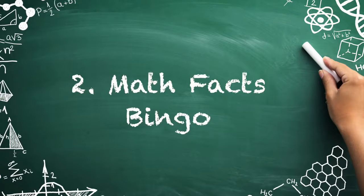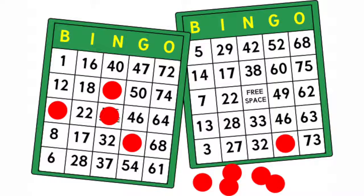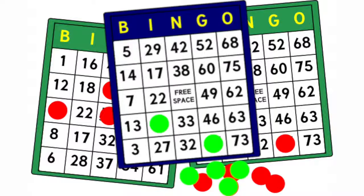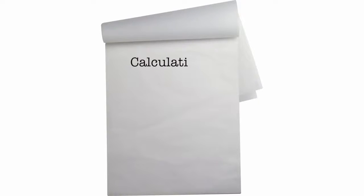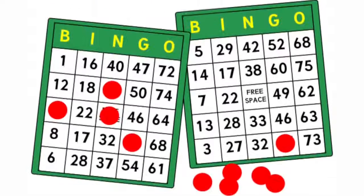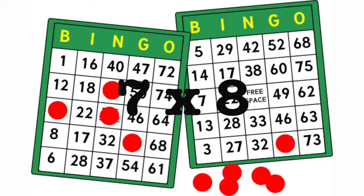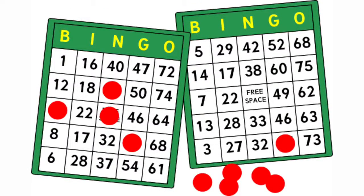Number two: math facts bingo. Make fact fluency drills engaging by playing this version of bingo. First, create bingo cards that contain answers to different multiplication tables. Second, hand them out to students and make sure they have a separate sheet for calculations. Finally, instead of calling numbers, state equations such as seven times eight. After determining the product is 56, they can check off the number if it's on their cards.